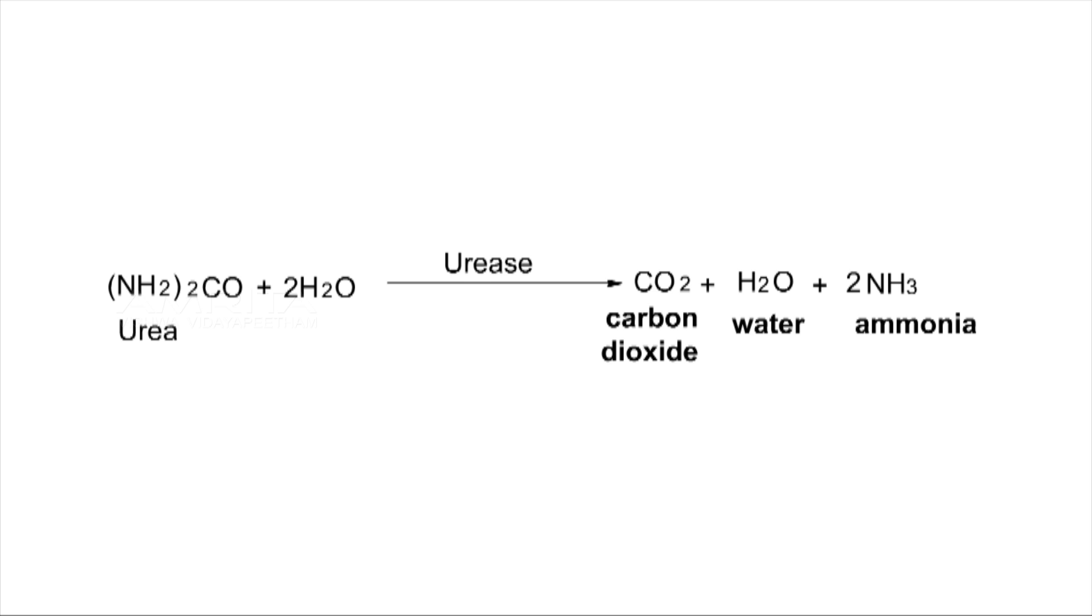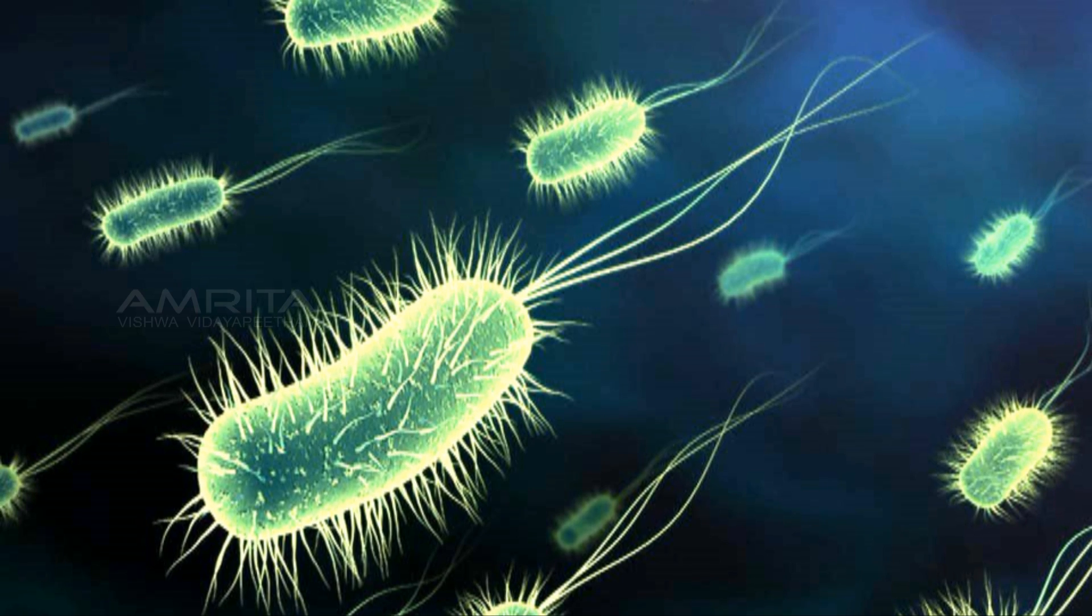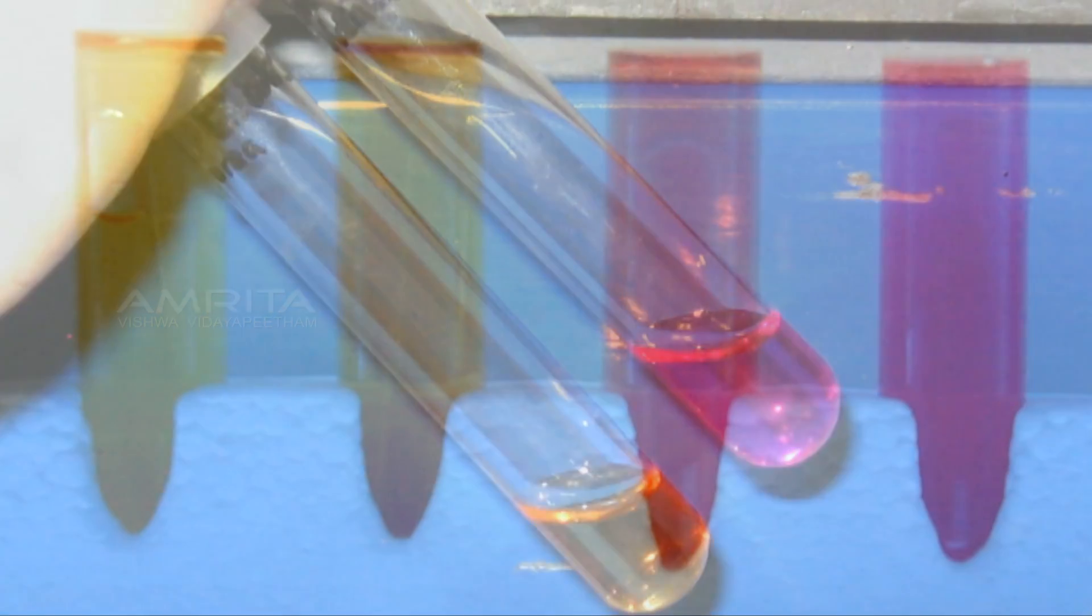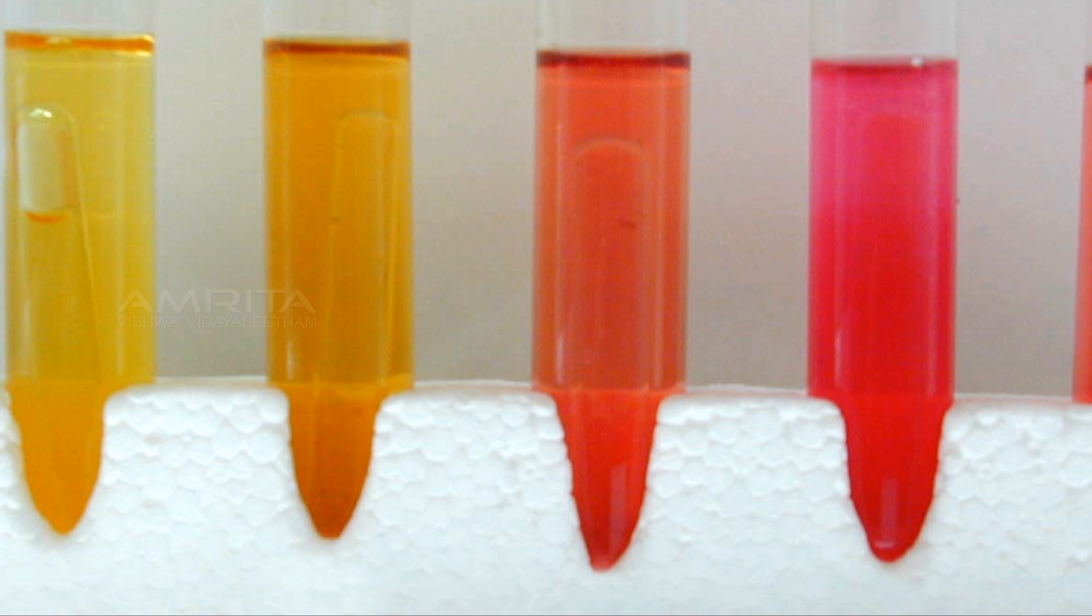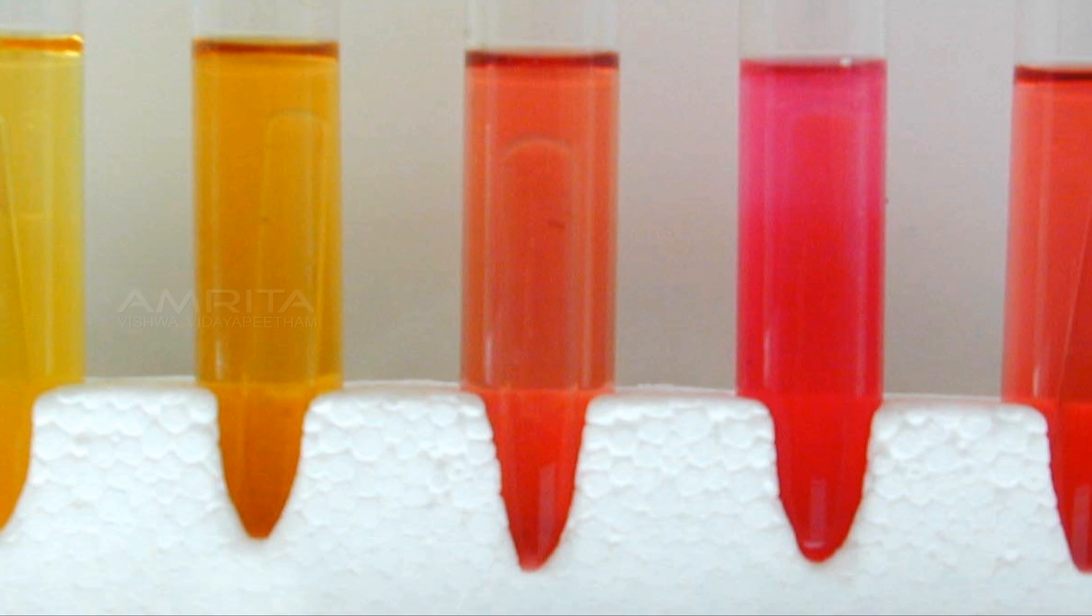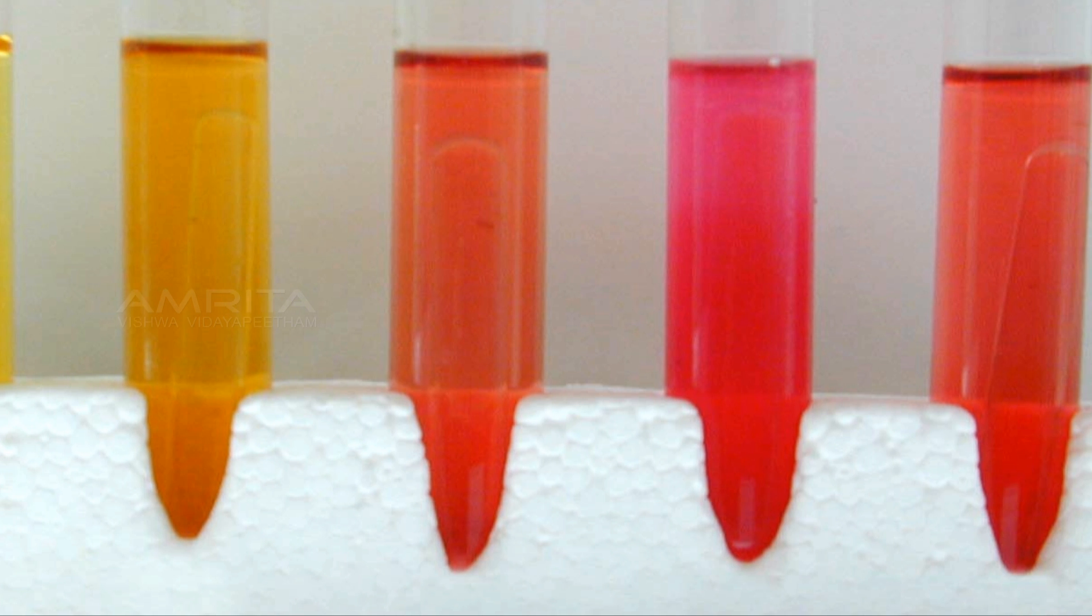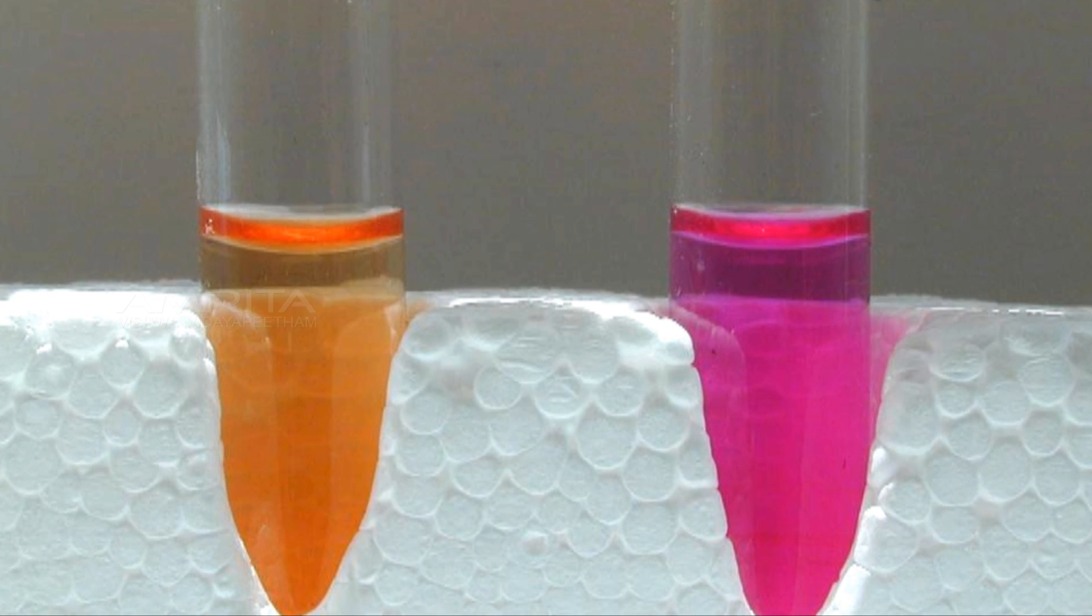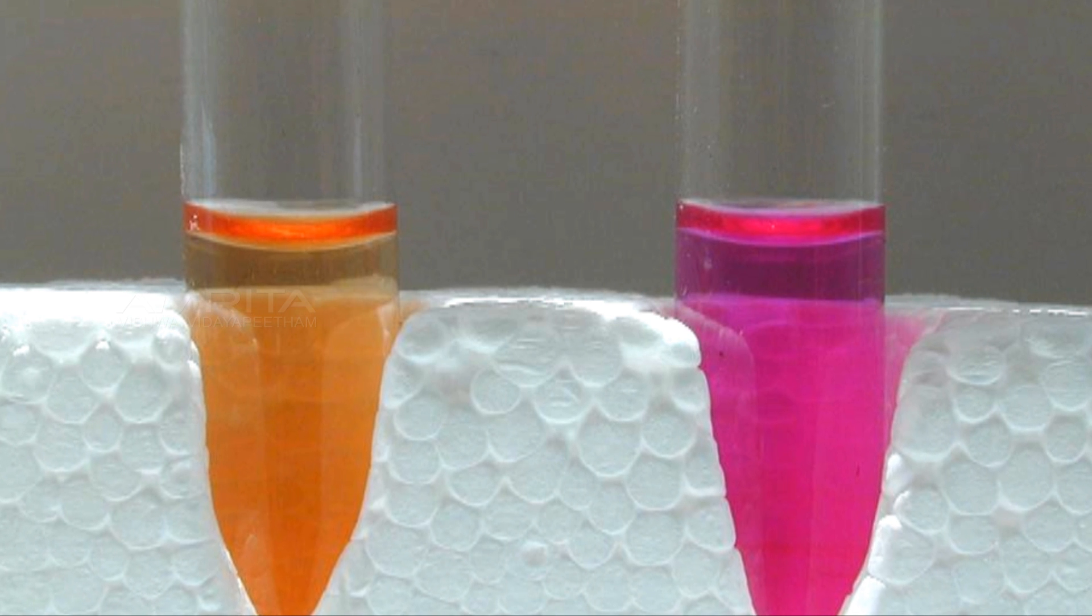The purpose of the urease test is to determine the ability of microorganisms to degrade urea by means of the enzyme urease. The presence of urease is detectable when organisms are grown in a medium containing urea and the pH indicator phenol red. Phenol red turns yellow in an acidic environment and deep pink in an alkaline environment.